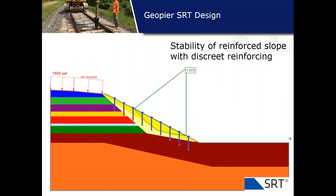All SRT systems are designed by starting with a limit equilibrium model with a factor of safety of 1.0 to determine the existing soil conditions that led to the slope instability problem. With knowledge of the shearing resistance available from the L-pile analysis, the model is set up with enough plate piles at the proper spacing and number of rows to achieve the required factor of safety to resist the sliding working downhill.